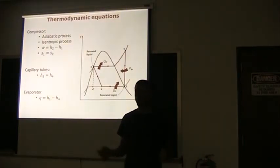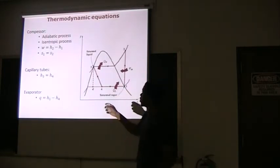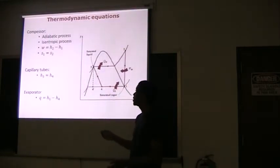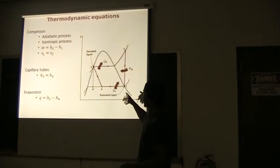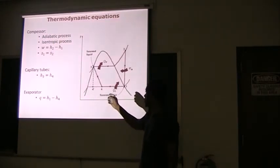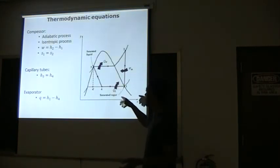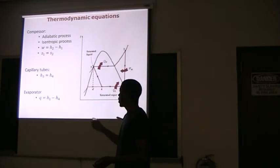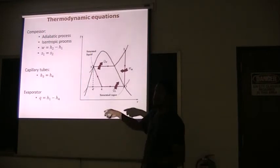Next, the thermodynamic equations that you'll be using to perform all of your calculations. For the compressor, of course, it's assumed to be an adiabatic process, and it's assumed to be isentropic. You have your work is equal to the enthalpy across two and one. The capillary tubes, that's the expansion. That's the process from three to four. H3 is equal to H4. And the evaporator, you can calculate your Q by the H1 minus the H4.